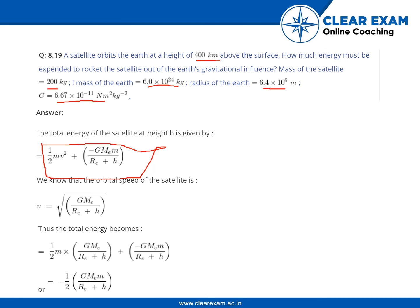So the total energy becomes ½m × GMₑ/(Rₑ + h) plus minus GMₑm/(Rₑ + h). You can take this common, so you will be having minus ½GMₑm/(Rₑ + h).